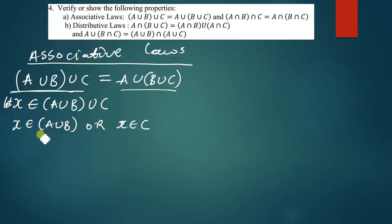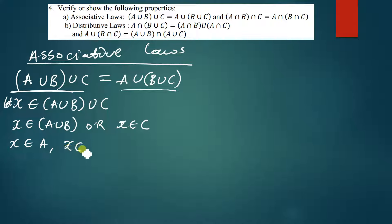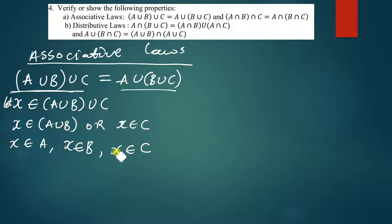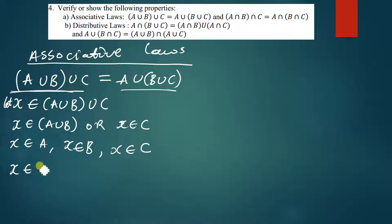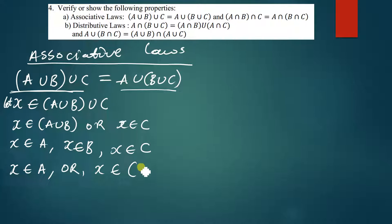When x is a member of A union (B union C), this means x can be a member of A union B, or it can be a member of set C. Because of the union symbol, we can further say x can be a member of A, or x can be a member of B, or x can be a member of C.